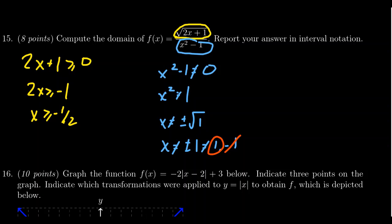So we would write something like bracket negative 1 half, because negative 1 half is acceptable. Go up to 1. Then we're going to put a parenthesis there, because 1 is not included. If you plug in x equals 1, that makes the denominator go to 0, that's not a real number.